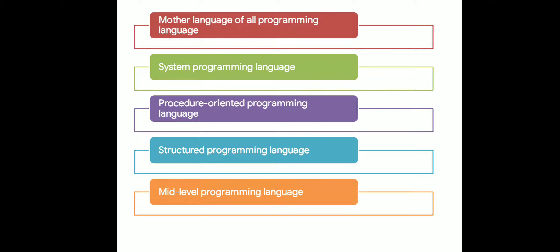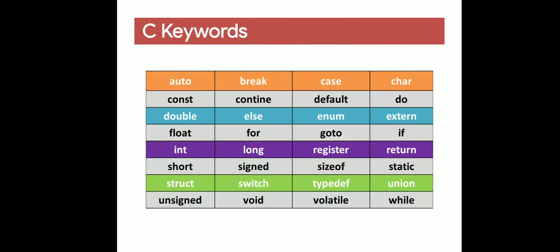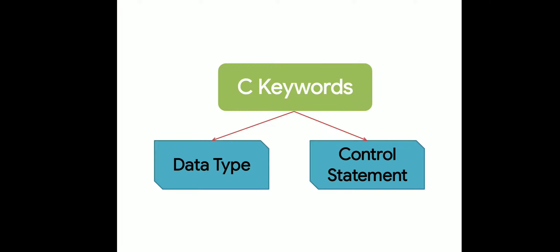High-level languages include Python, Java, etc. Moving to the next slide: C is a combination of 32 keywords. These 32 keywords are divided into two types — data types and control statements. Data types include void, int, float, and double.